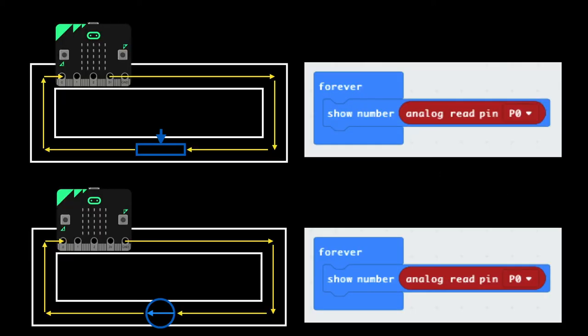In some cases, it doesn't really matter what the number read on a pin is. We just need to know if it's wet or dry, light or dark. This is called qualitative data. But in other cases, we need to know the temperature in degrees, or the light level in lux, or whatever it is that we're measuring.